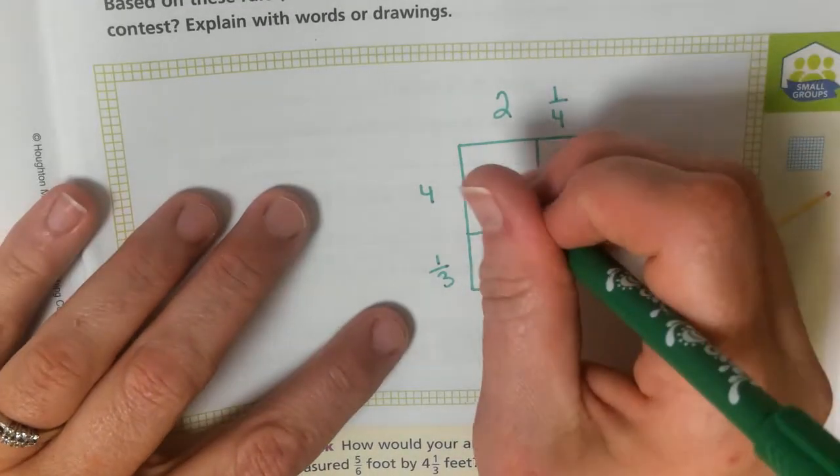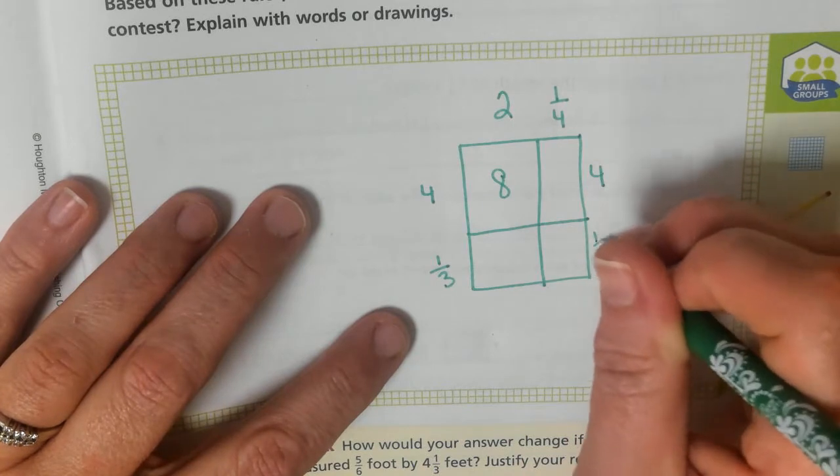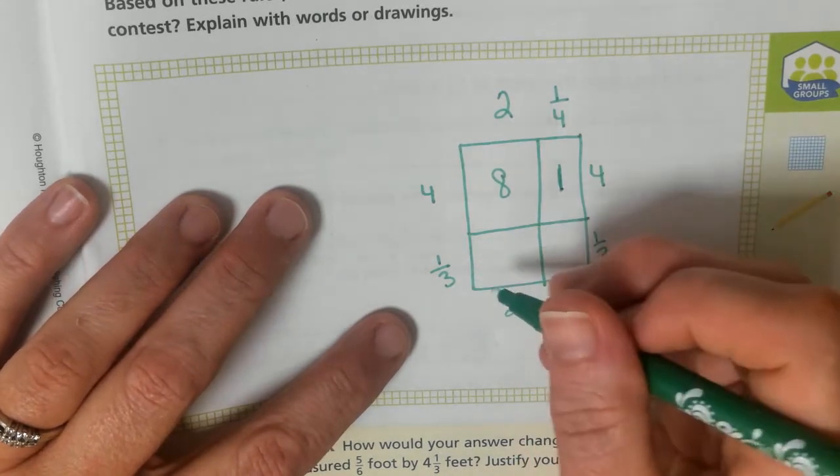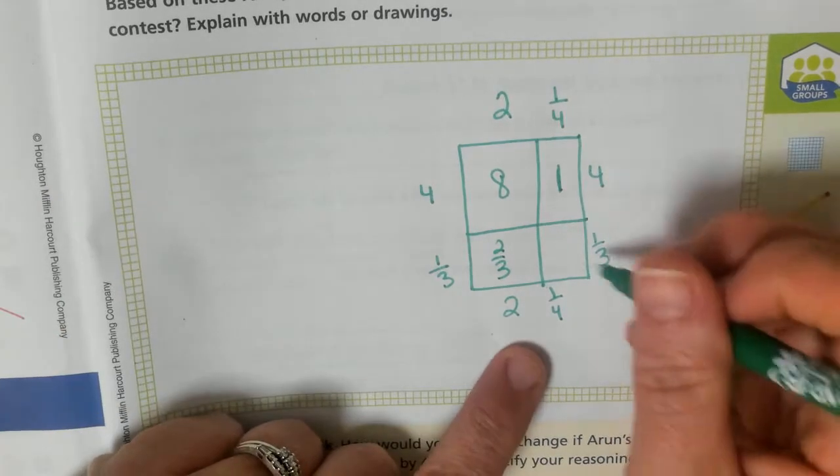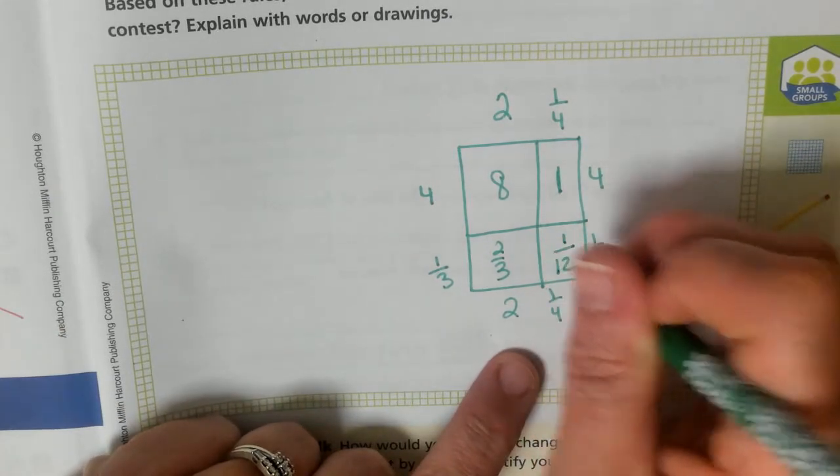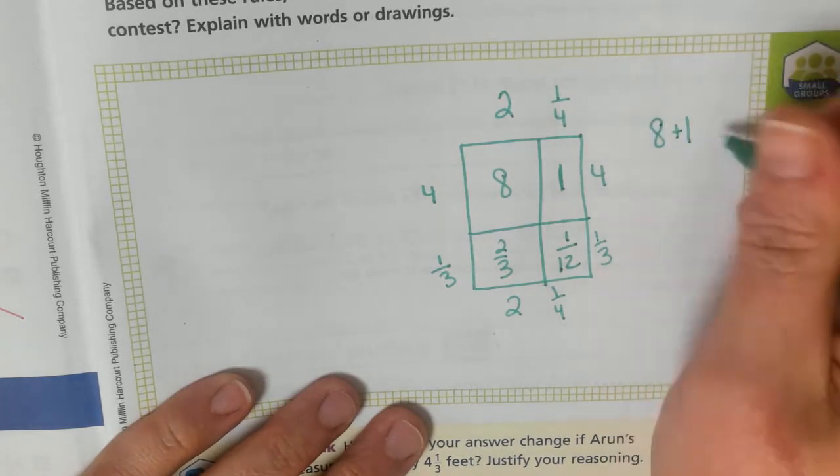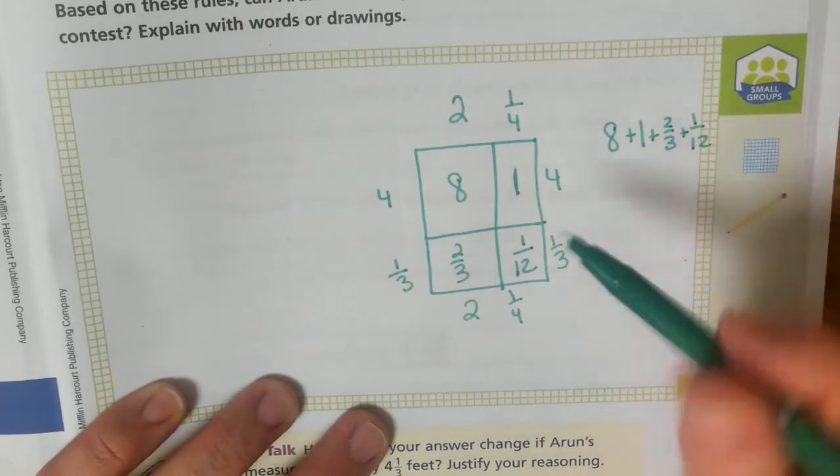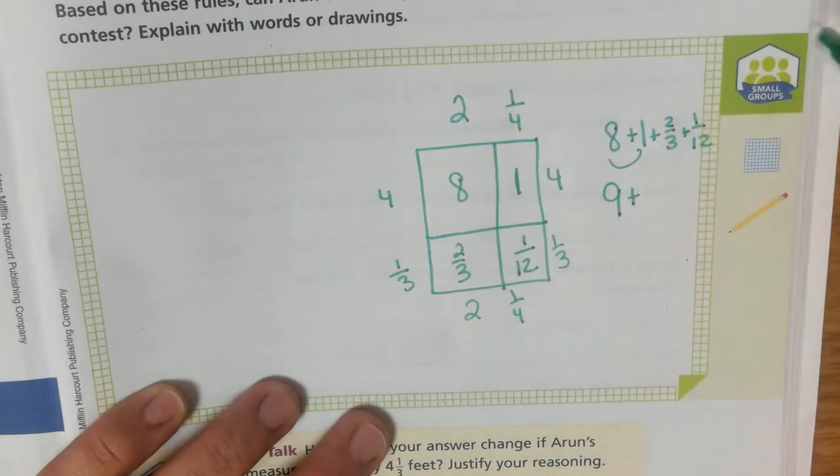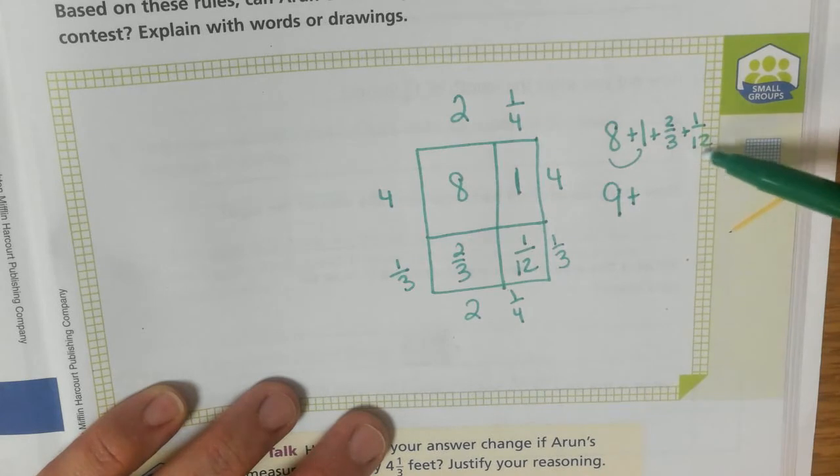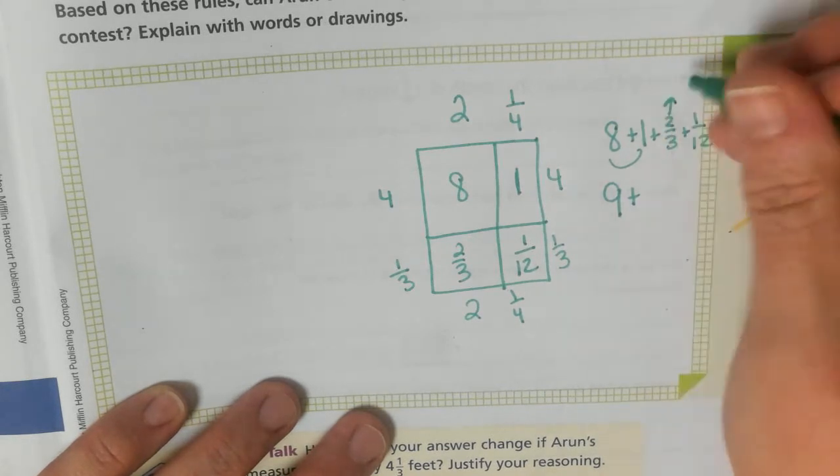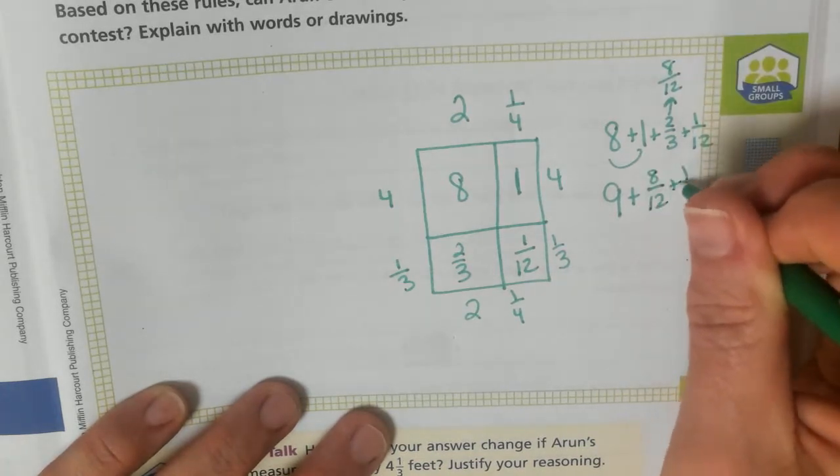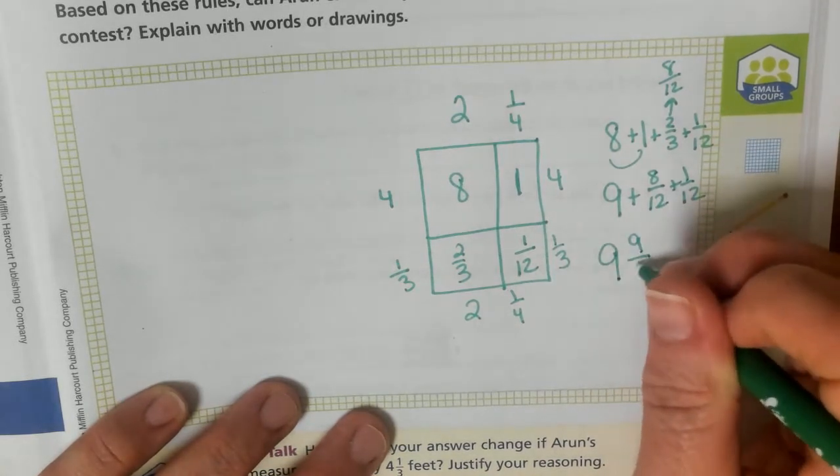Well, 2 times 4 is 8. You know that this would be a 4 and a 1/3, a 2 and a 1/4. So, 4 times 1/4 is 1. 2 times 1/3 is 2/3. And, 1/3 times 1/4 is 1/12. So, we would have 8 plus 1 plus 2/3 plus 1/12. 8 plus 1 is 9. We're going to regroup to change this to twelfths.